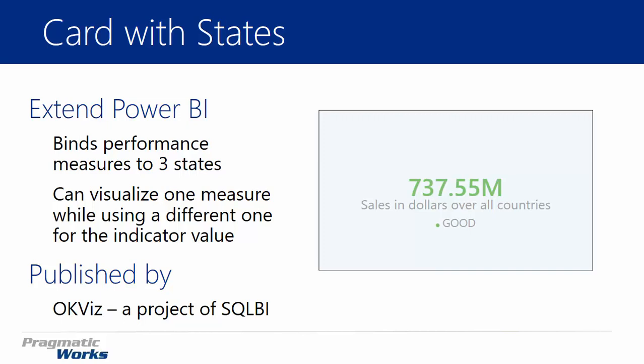You can visualize one or more measures, so you can actually have one measure being shown while another measure is being used for the indicator. As you can see in the screenshot on the right-hand side, it's showing that we're in the 'good' state as far as this measure is concerned. That reference of 'good' can be determined by a completely different measure than what you're displaying above it, so you have some flexibility when it comes to that.